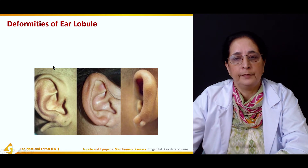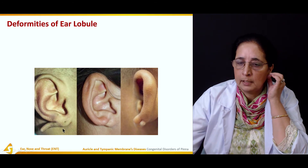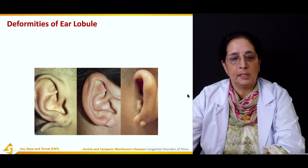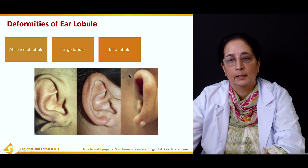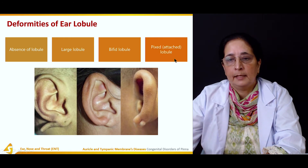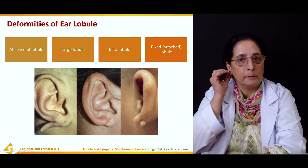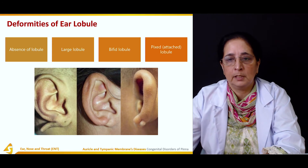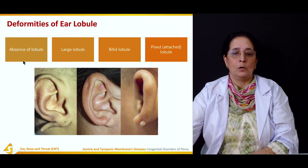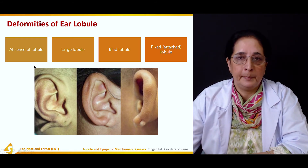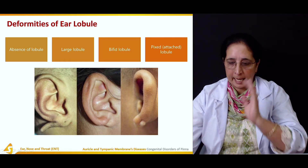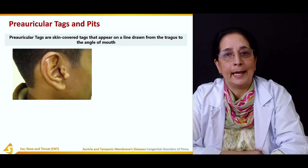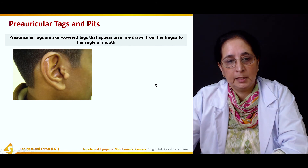Deformities of the ear lobule — the bottom part of the pinna — include absence of the lobule, a large lobule, a bifid lobule which has two parts, and fixed or attached lobules where the lobule is attached to the back and not movable.